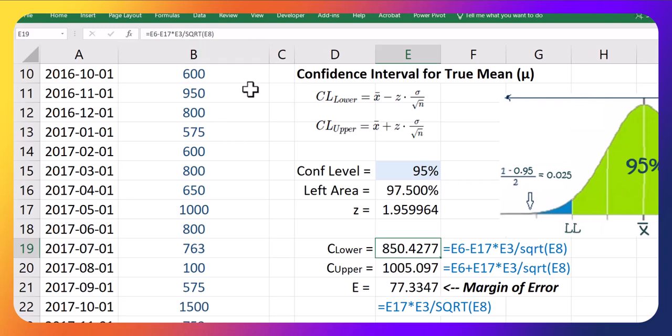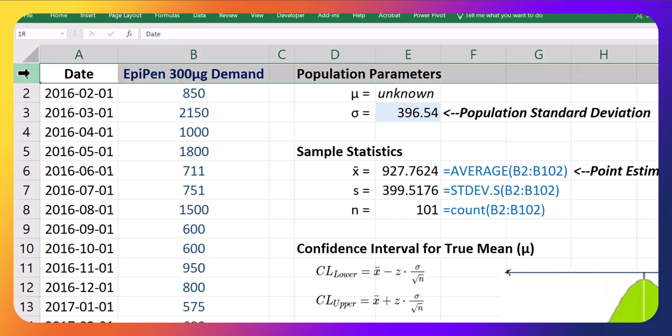In this case, we're talking about the demand. And so for using this average to inform the demand for this type of EpiPen and to inform our ordering quantities for the future, again, we need to be careful. And we'll speak to this more later.